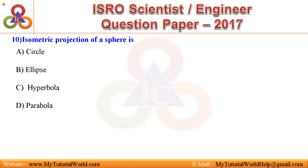Question 10. Isometric projection of a sphere is: A. Circle. B. Ellipse. C. Hyperbola. D. Parabola. Answer is: Circle.